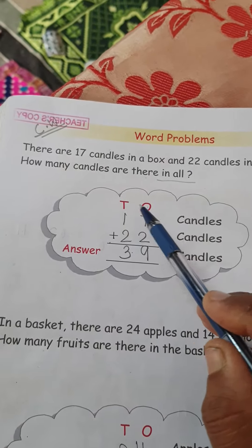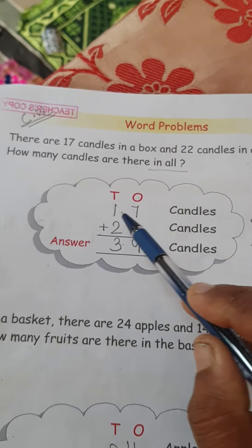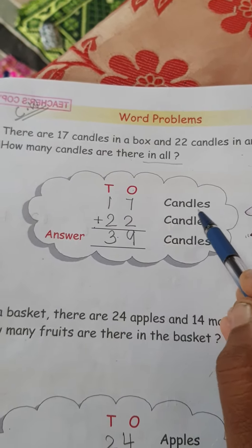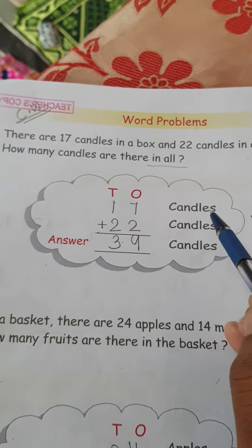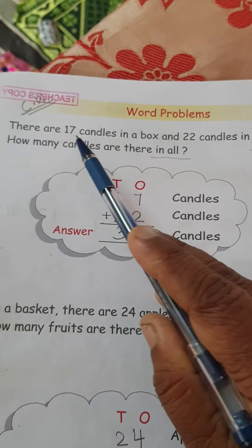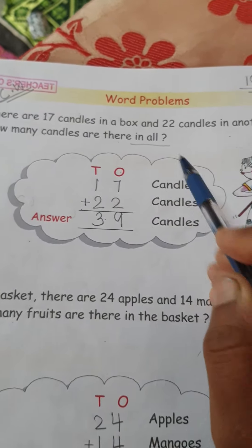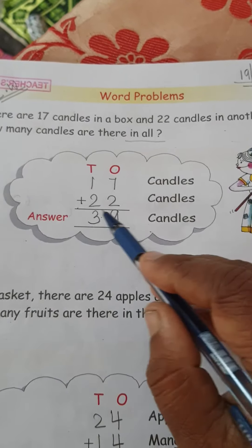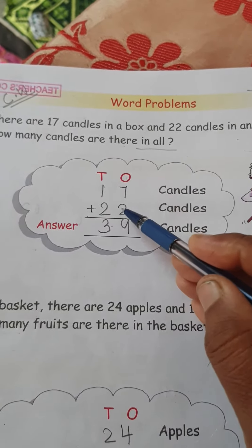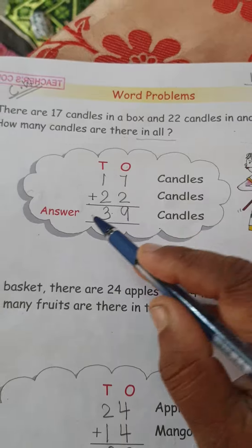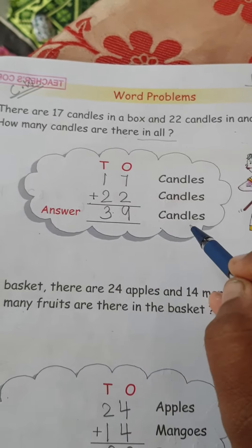Write first, ones and tens. First, write 17 here. Candles written here. But when you do in the notebook, you have to write everything. 17 candles. Then 22 candles. Then addition, 7 in the mind, 2 in the finger like this. Answer also 39 candles like this.